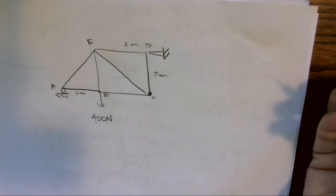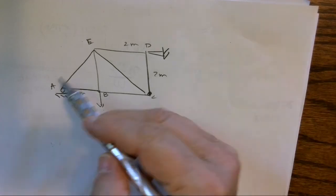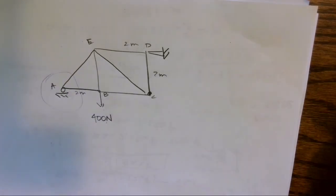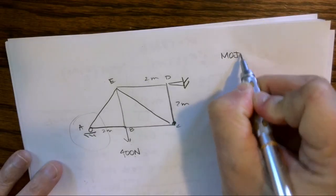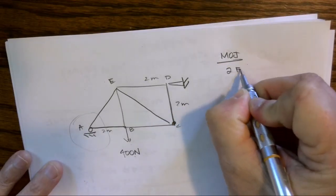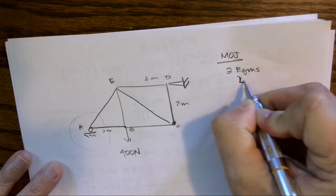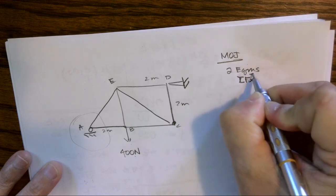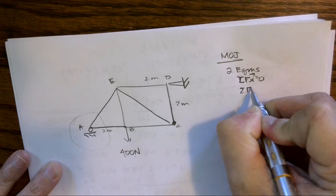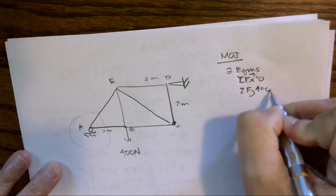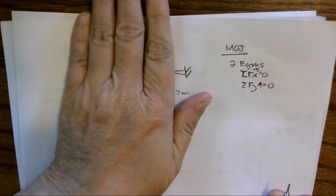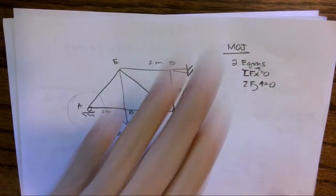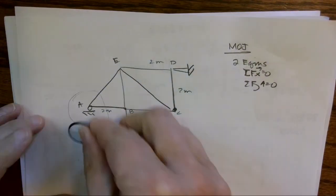So when we do method of joints, the first thing we need to remember is we only have two equations that we can use: we can sum forces X and we can sum forces Y, because when we're looking at this method we literally cover up everything but the joint that we're looking at.